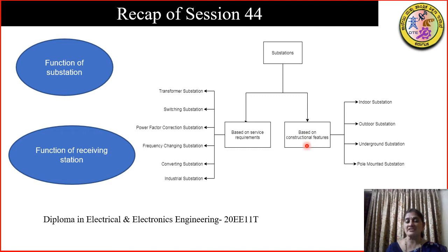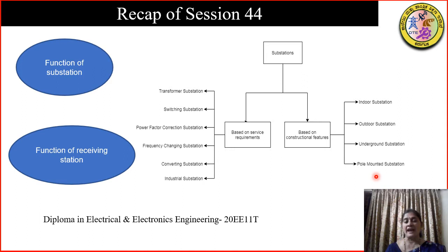Based on constructional features, we had four subdivisions: indoor substation, which was installed indoors for voltages below 66 kV; beyond 66 kV, we installed the substation outdoors. When there was a lack of space or high cost of land, we went into underground substation. The most popularly used substation as a distribution substation is the pole-mounted type, for convenience and saving on cost.